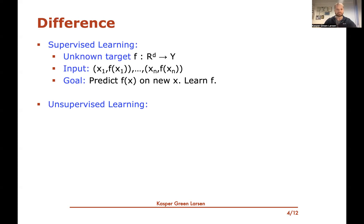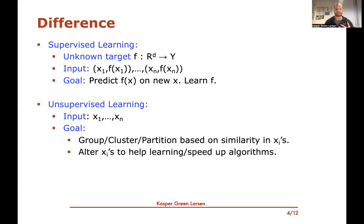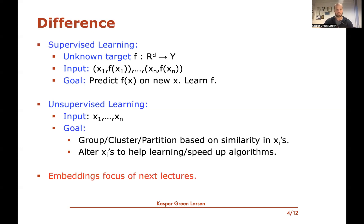In unsupervised learning, the main difference is that there's no unknown target function. There are basically only feature vectors — input elements x1 up to xn — and the goal could be to cluster them based on similarities in the features, with no predefined scheme that assigns labels. Another idea could be to change these feature representations to help learning algorithms in terms of speed and so forth, and we will particularly look at this last setup today.